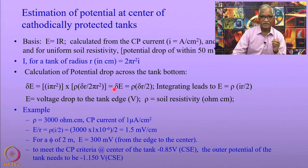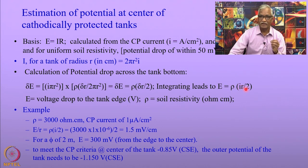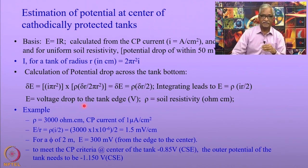If one integrates this potential drop with respect to distance up to the radius of the tank, then E turns out to be ρ × current density × radius of the tank / 2. So it is possible to calculate the potential of the tank at the center if you know the potential of the tank at the edge.